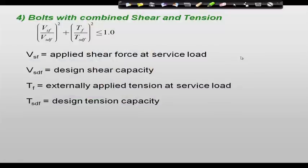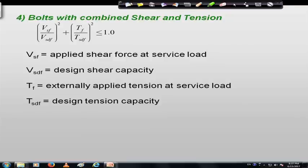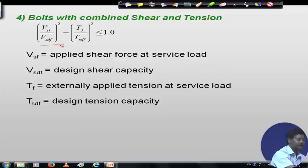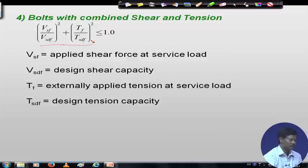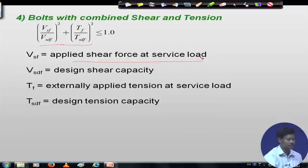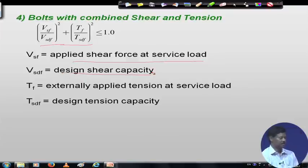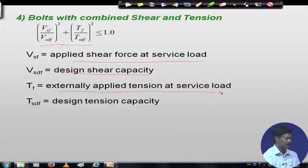If bolts are in combined shear and tension, we must check the interaction formula: (V_SF / V_SDF)² + (T_F / T_SDF)² ≤ 1, where V_SF is the applied shear force at service load, V_SDF is the design shear capacity, T_F is the externally applied tension at service load, and T_SDF is the design tension capacity.